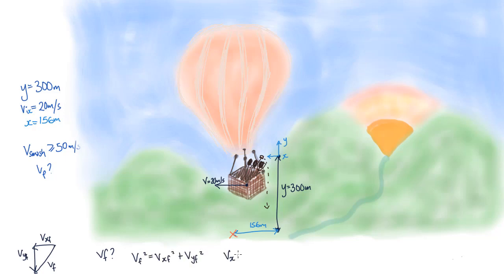We already know the horizontal velocity. Because there are no horizontal forces, the final horizontal velocity equals the initial horizontal velocity of 20 meters per second. We can calculate the final vertical velocity from our projectile motion equations. The initial vertical velocity is zero, so the final vertical velocity is 77 meters per second.